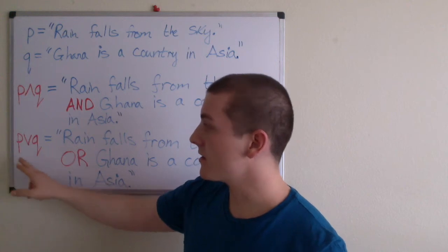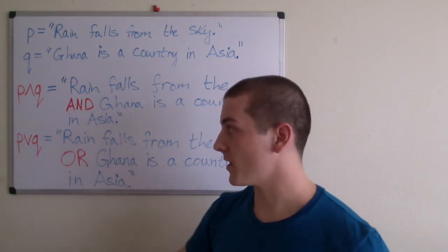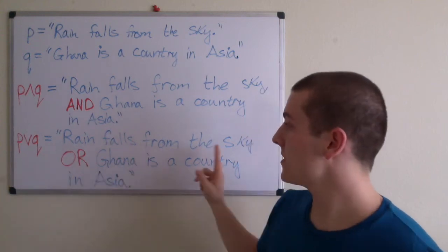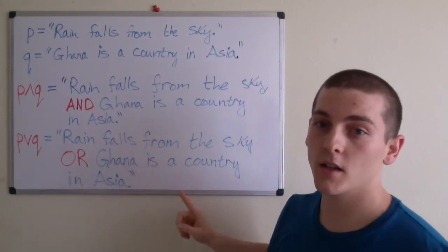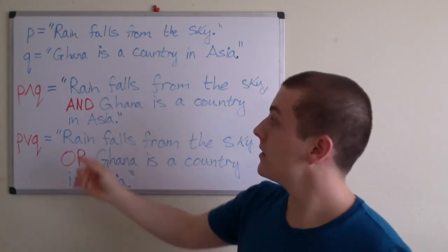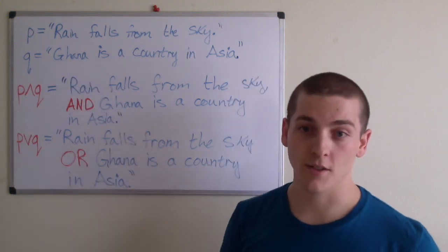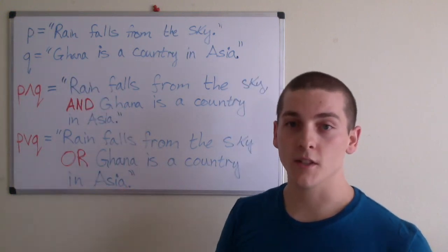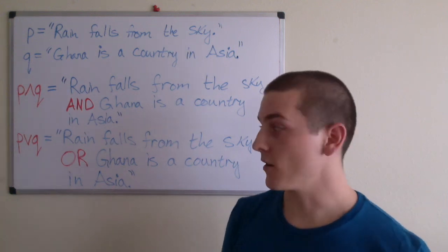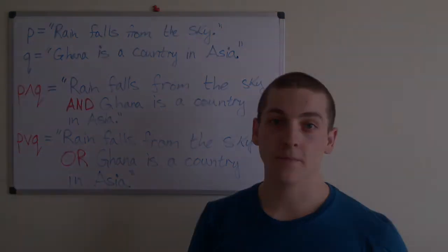The next is the disjunction — P or Q. 'Rain falls from the sky or Ghana is a country in Asia.' Again, we have true or false this time. Only one of these needs to be true in order for everything to be true, and therefore P or Q is a true statement.